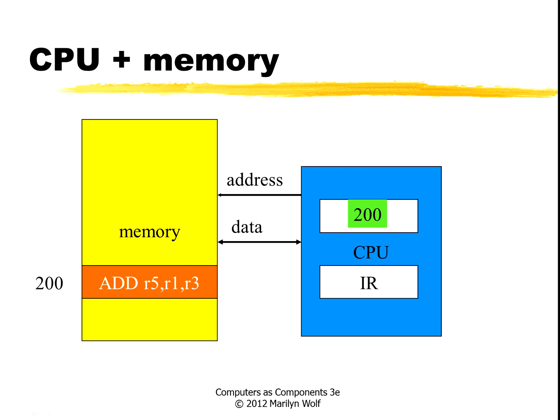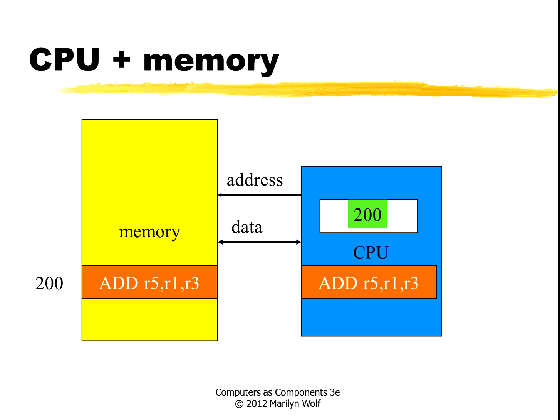In this case, our program counter has a value of 200. So we want to use the contents of location 200 as the next instruction. The CPU sends that address on the address bus to the memory. The memory sends back the contents, and the CPU puts those contents in the instruction register. Now the instruction register has this instruction inside the CPU, and the CPU can work on it.